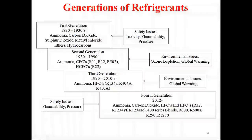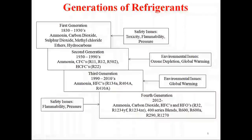Generation of refrigerants. The first generation is between 1830 to 1930. The refrigerants used in this generation are ammonia, carbon dioxide, sulfur dioxide, methyl chloride, ethers, and hydrocarbons. The main issues with these refrigerants are toxicity, flammability, and operating pressure.